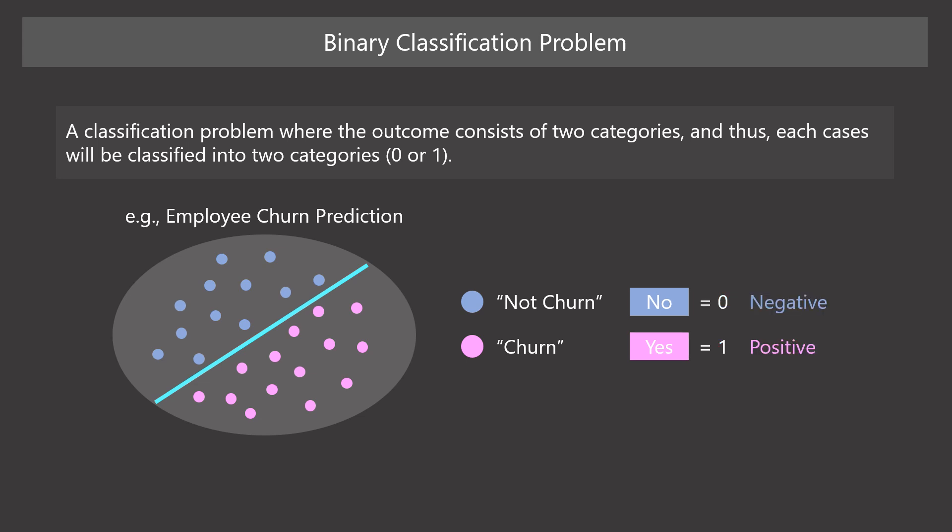As a jargon, we call cases classified into 0 as negative and those classified into 1 as positive. The words positive and negative just mean yes or no. They do not have connotation of desirability. So depending on the problem, positive cases are not desirable cases.